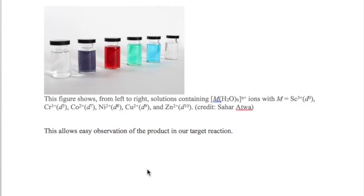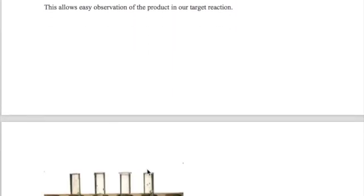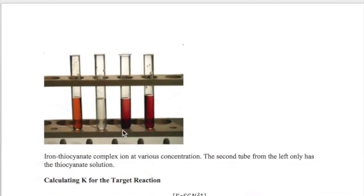The complex ion we will work with today is iron thiocyanate, which has a reddish color as shown below. This allows an easy way to detect this complex ion when it is formed.